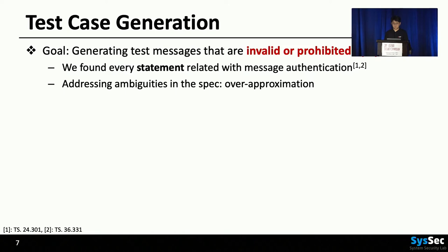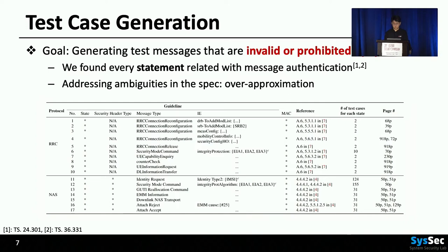Next, we generated test messages that are invalid or prohibited by specification. To do this, we searched every statement related to message authentication from RRC and NAS specifications. Then we generated a guideline — our rule that specifies message types and contents to generate test cases. These are the full guidelines we generated. To address ambiguities in the spec, we over-approximated our test messages. Specification cannot describe every detail, so we also altered unspecified fields in the messages.